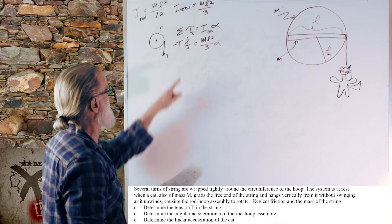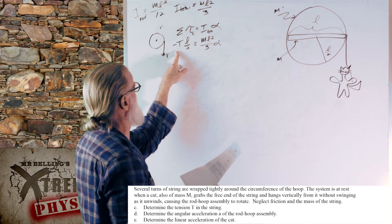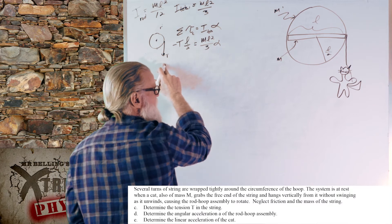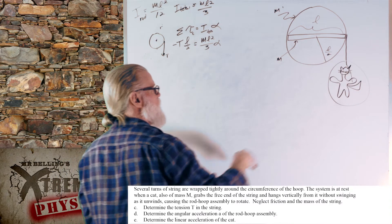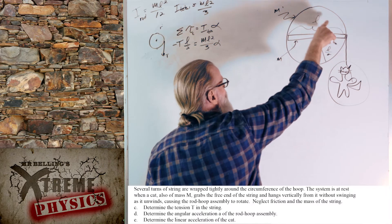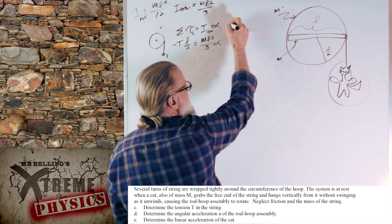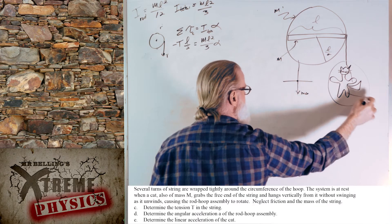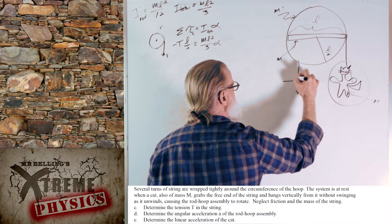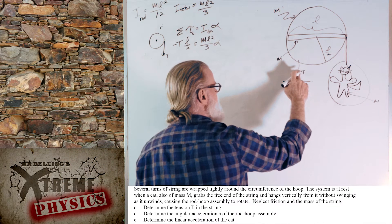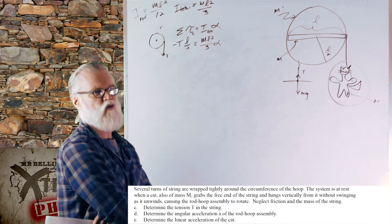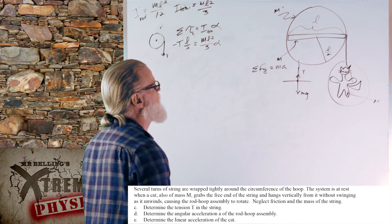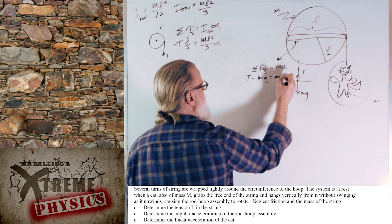We have one equation with two unknowns — tension and angular acceleration — so we need more information. Let's analyze the cat. As the cat accelerates, so does the outer edge of the rim; they move together. Free body diagram of the cat: weight mg down and tension T up. Since the cat accelerates downward, tension must be less than its weight. Sum of forces in the y-direction: T minus mg equals M times acceleration.